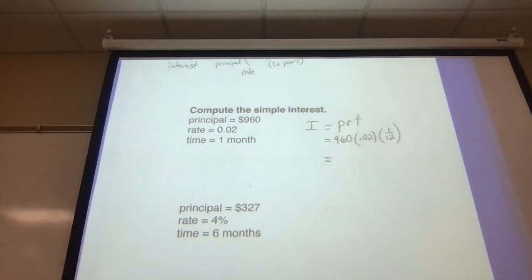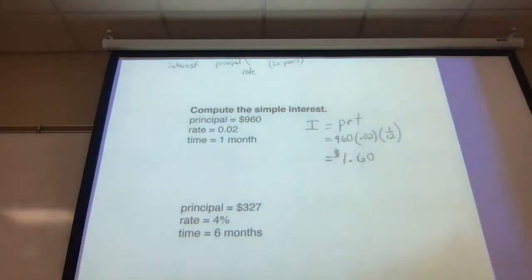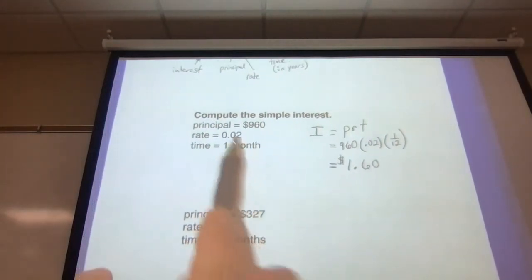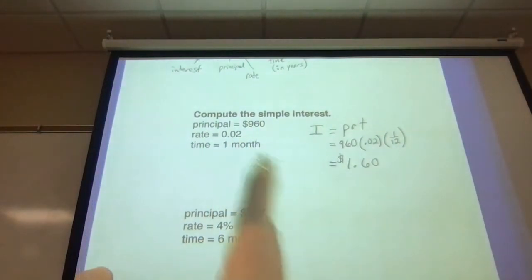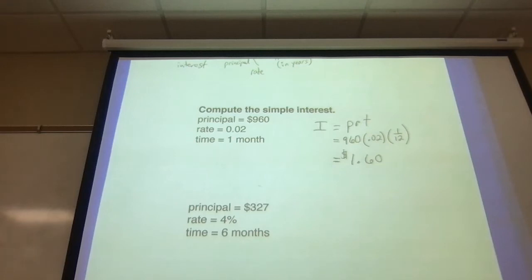That 1/12, you can just put in the calculator as 1 divided by 12. That gets only $1.60. So after one month of simple interest on 960 bucks at 2% interest, you would earn $1.60 in interest. Questions on that first one?